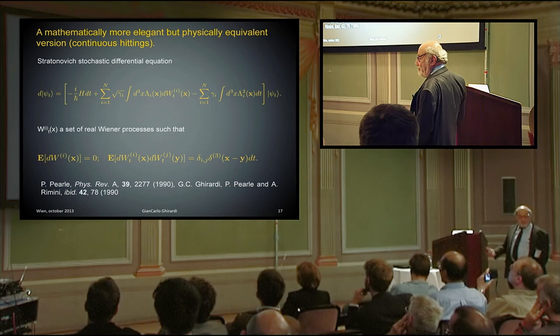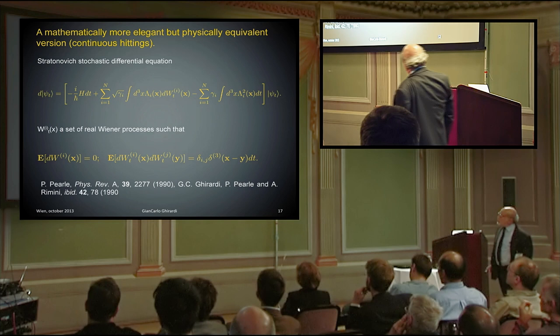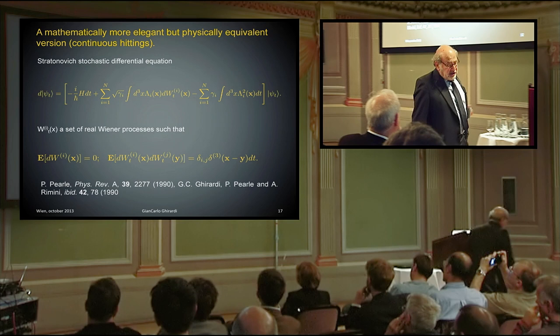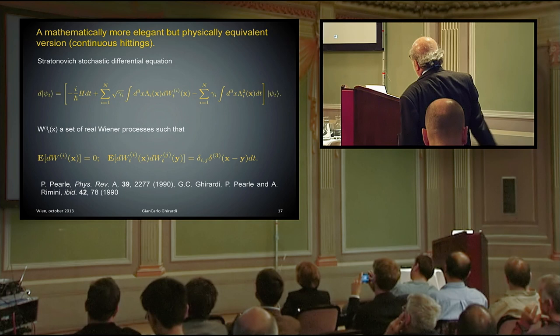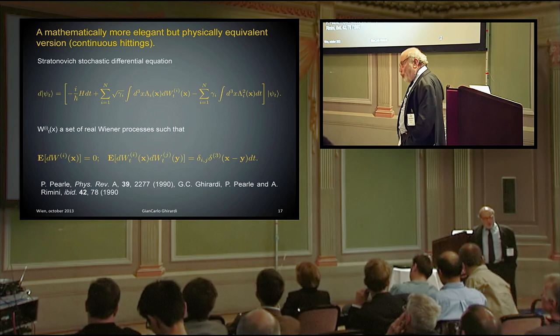Mathematically more elegant, this is what has been worked out by Philip Pearle essentially, and subsequently by Pearle, Rimini, and myself, is to use a Stratonovich stochastic differential equation. The W_i is a set of real Wiener processes, which average zero and covariance that I have written there. And essentially, this equation physically is very strictly related. Actually, I have proven that if you take the statistical operator in the Hilbert space, you can have a hitting process which is as near as you want to a solution of this equation for all times.